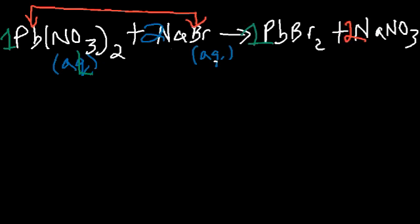Now we determine the phases. Nitrates are always soluble, so NaNO₃ is aqueous. Lead bromide: halides like chloride, bromide, and iodide are generally soluble except with silver, lead, and mercury — so lead bromide is an exception and is insoluble (solid).